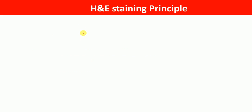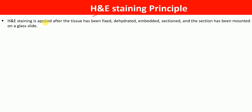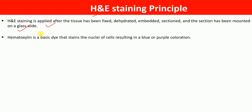What is the principle of H&E staining? H&E staining is applied after the tissue has been fixed, dehydrated, embedded, sectioned, and the section has been mounted on a glass slide. Hematoxylin is a basic dye that stains the nuclei of the cells, resulting in a blue or purple coloration.